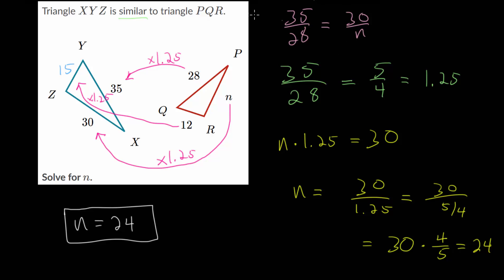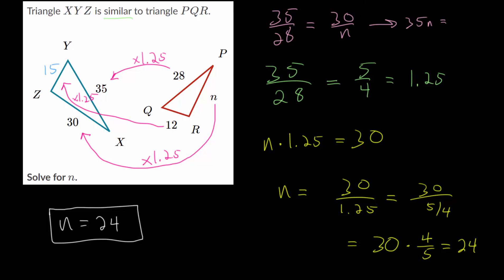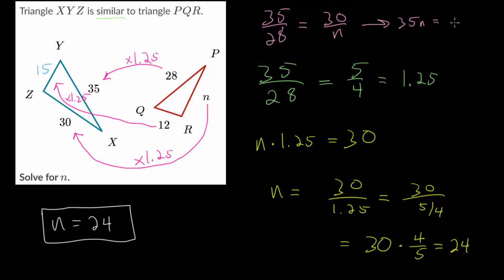And from here, we just have an equation we can solve for n. We could multiply each side by n and each side by 28, which means we would have 35n is equal to 28 multiplied by 30.